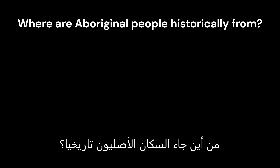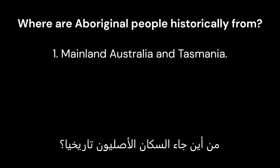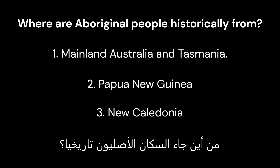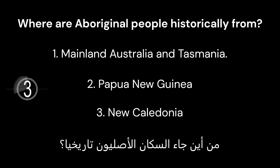Question 10: Where are Aboriginal people historically from? Option 1: Mainland Australia and Tasmania. Option 2: Papua New Guinea. Option 3: New Caledonia. Correct answer is 1: Mainland Australia and Tasmania.